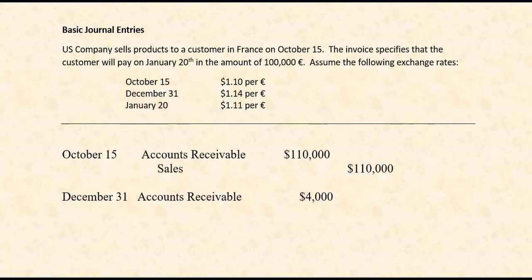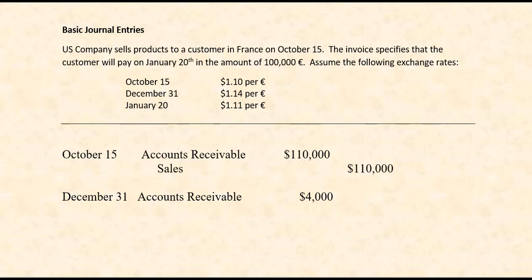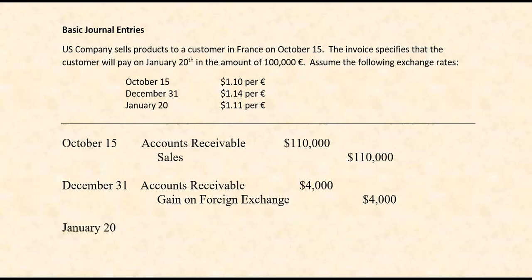Has the receivable gone up? Has it gone down? By December 31, the accounts receivable has gone up because we are going to be receiving 100,000 euros. Originally we thought they would be worth $110,000. By December 31, we now believe that will be worth $114,000. I only need to debit the additional amount — I already had the accounts receivable at $110,000, so to get it to $114,000, I need to add $4,000. This increase is like making any investment: you invested in euros, they went up in value, so that would be a gain — we're going to call this foreign exchange gain. This gain is related to foreign exchange and it will go on the U.S. company's income statement in the current year.